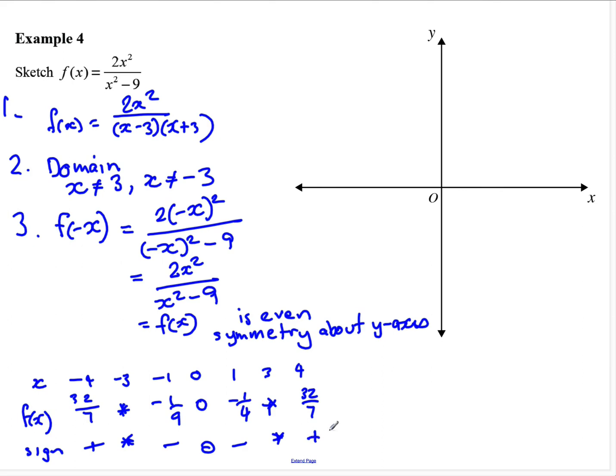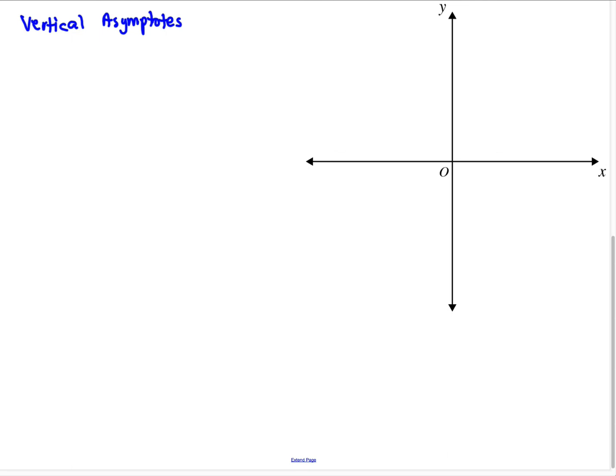So we've had a bit of a look at intercepts and where it's positive and negative. Let's consider the vertical asymptotes. So we know the denominator vanishes at x equals 3 and x equals negative 3. So if we consider our table of values or our table of signs that we had, the function approaches infinity, positive infinity as x approaches 3 from the positive direction. And it approaches negative infinity as x approaches 3 from the negative direction.